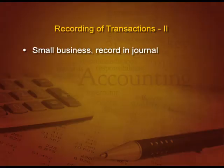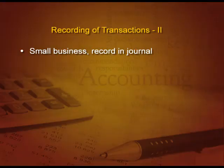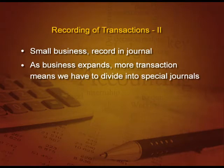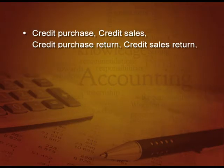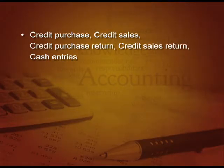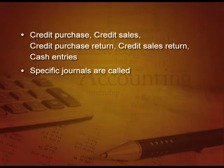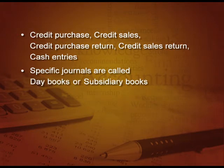When the business is very small, we record in journal. But as the business expands, more and more transactions means we have to divide into special journals, which means that specific transactions of a similar type are recorded in a separate journal, like credit purchase, credit sales, credit purchase return, credit sales return, and cash entries. These are all recorded in their specific journals, also called day books or subsidiary books.